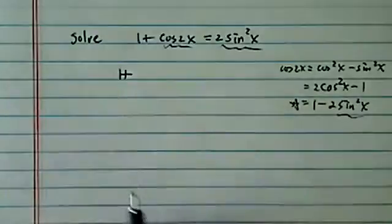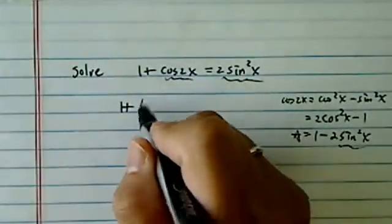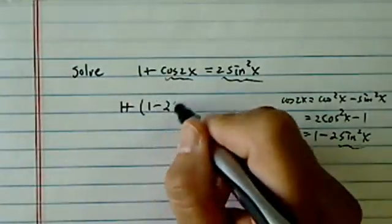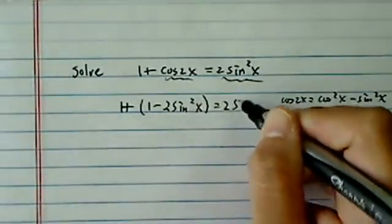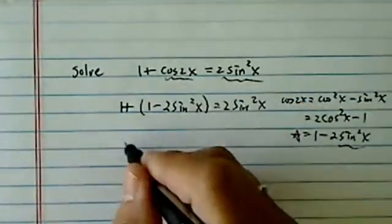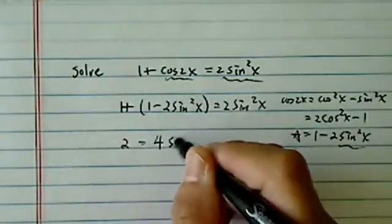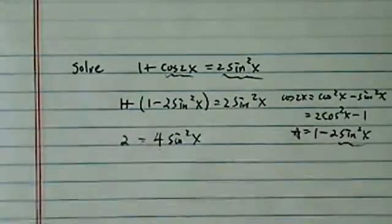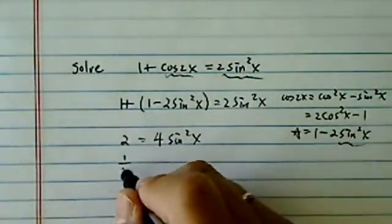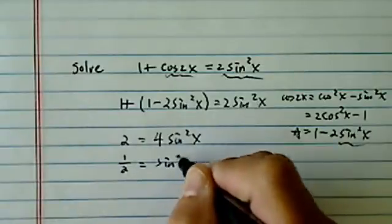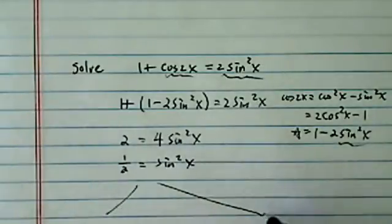So let's get right to it. Let's write it as 1 plus 1 minus twice sine²x equal to twice sine²x. We have 2 is equal to 4 sine²x. Divide by 2 on both sides, we have 1/2 equal to sine²x. From here, we have two cases.